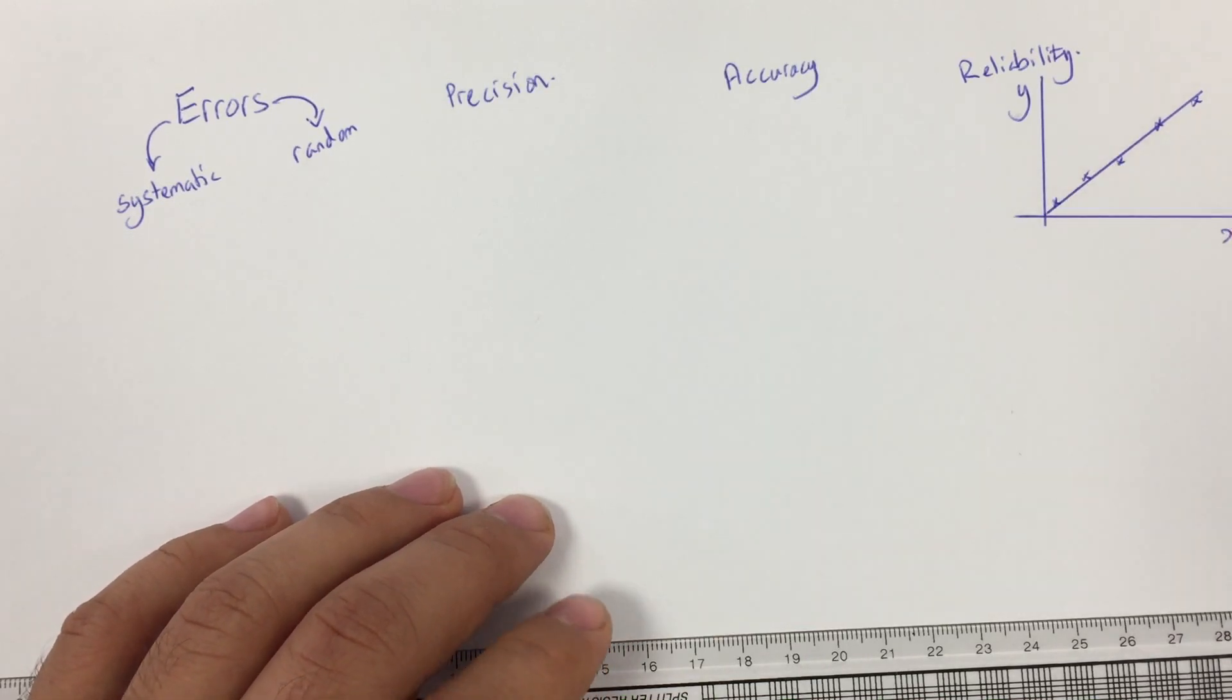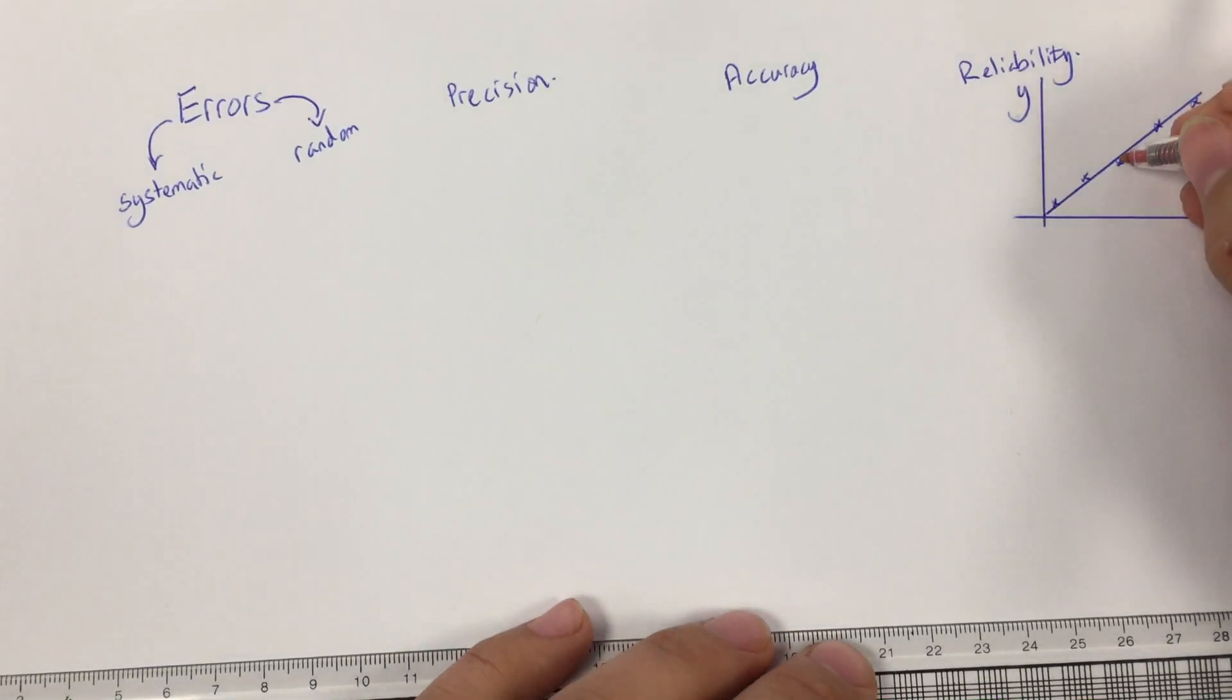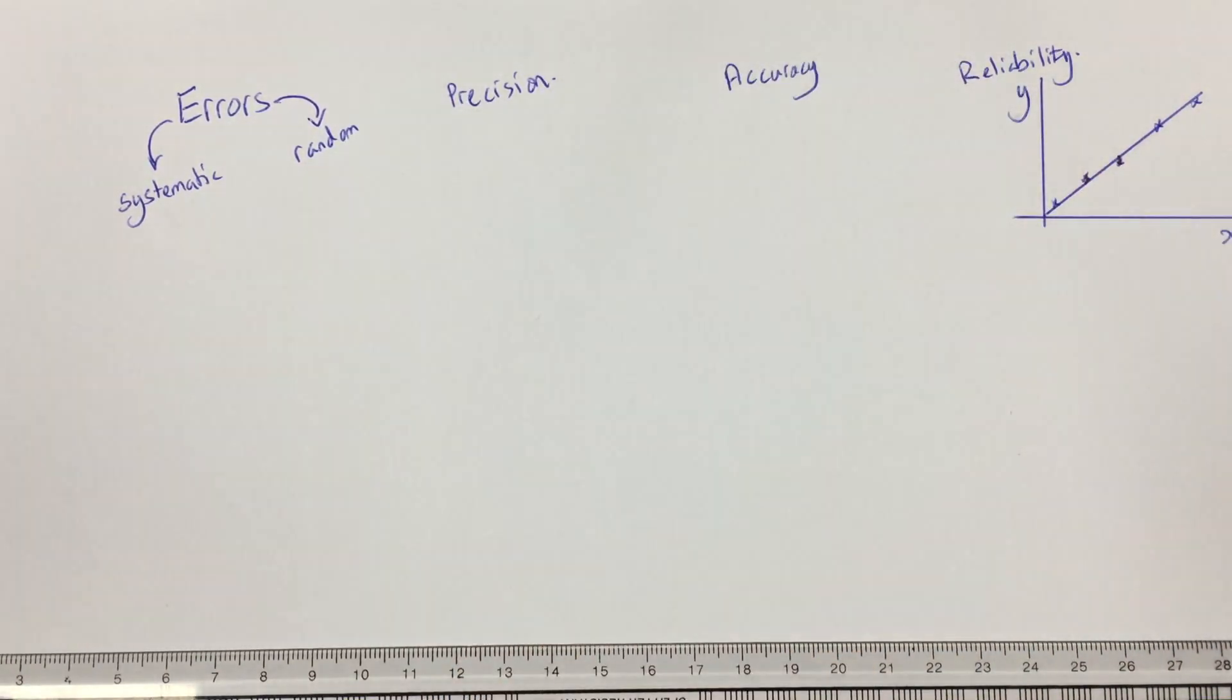So these small variations, you can see that's just a little bit away from the line of best fit there, and that one's a little bit higher, those small variations are due to random error.